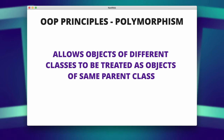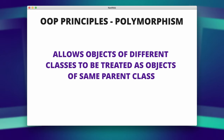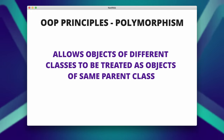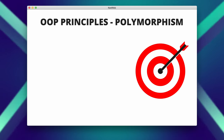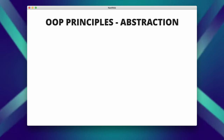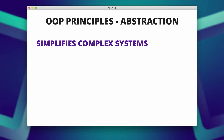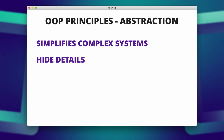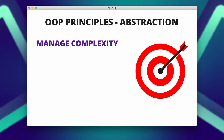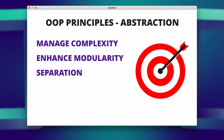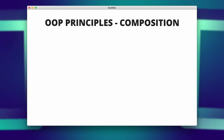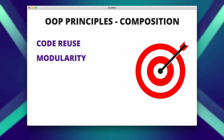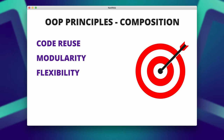Polymorphism means the ability of objects of different classes to respond to the same message or method invocation. It allows objects of different classes to be treated as objects of a common superclass, enabling code to work with objects of multiple types. Polymorphism helps in achieving code flexibility, extensibility, and modularization. Abstraction involves simplifying complex systems by representing essential features while hiding unnecessary details. It focuses on defining interfaces and behaviors without specifying the implementation. Abstraction helps in managing complexity, enhancing modularity, and providing a clear separation between interface and implementation. Composition refers to the construction of complex objects by combining simpler objects. Composition promotes code reuse, modularity, and flexibility, as objects can be easily composed and decomposed.